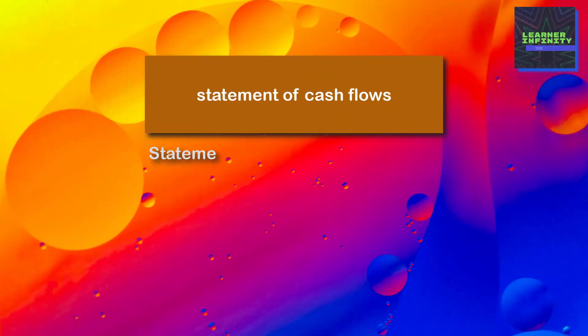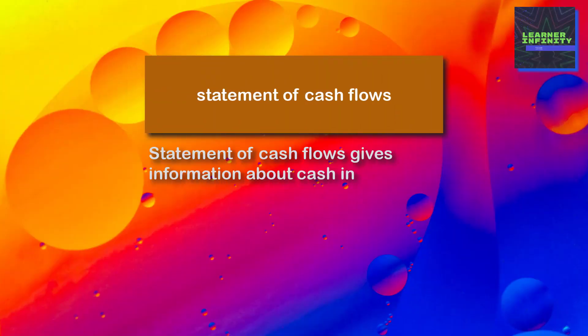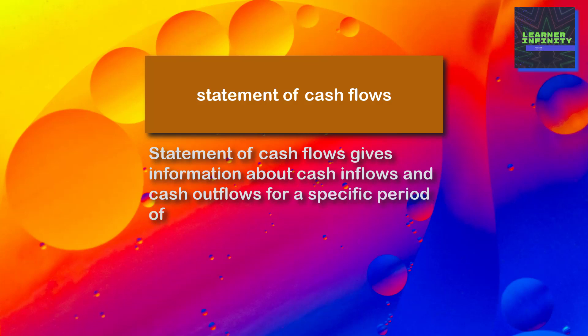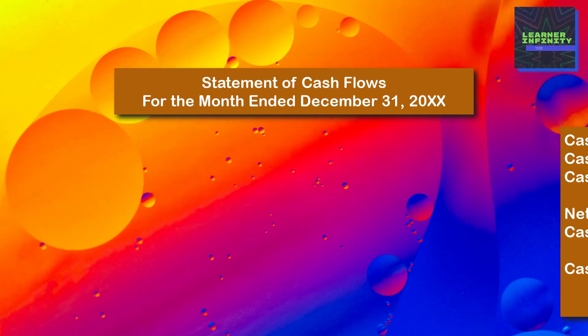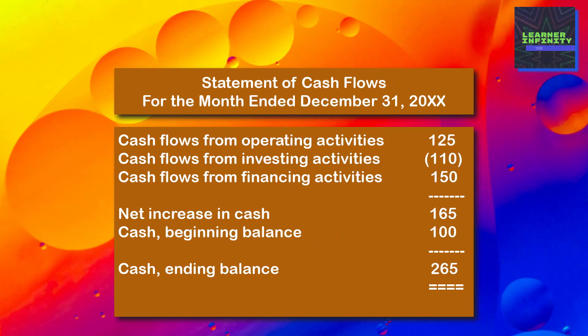Statement of Cash Flows gives information about cash inflows and cash outflows for a specific period of time. It's presented as cash flows from operating activities plus cash flows from investing activities plus cash flows from financing activities equals net increase or decrease in cash during the period, plus beginning balance of cash equals ending balance of cash.